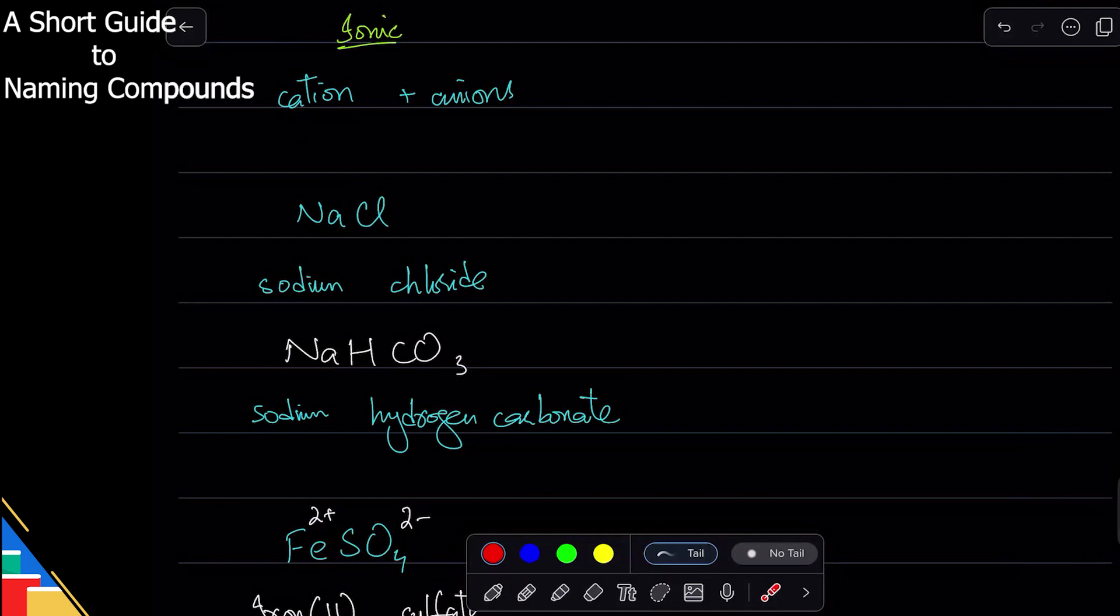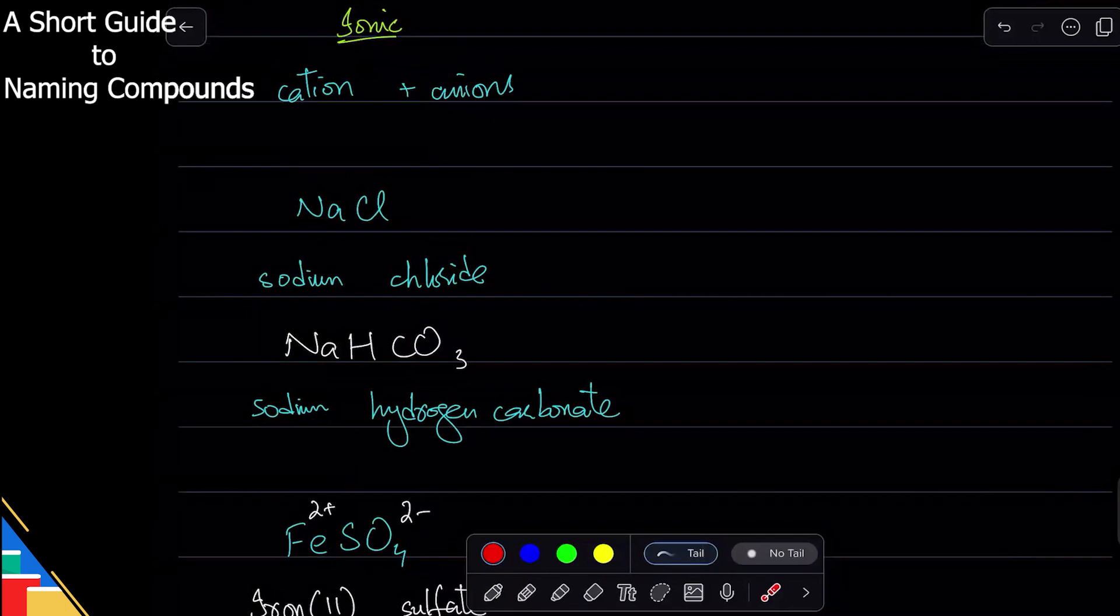All ionic compounds are named this way. Doesn't matter whether they have one cation and two anions, or two cations and one anion - you name the cations, then the anions, and you're good to go.